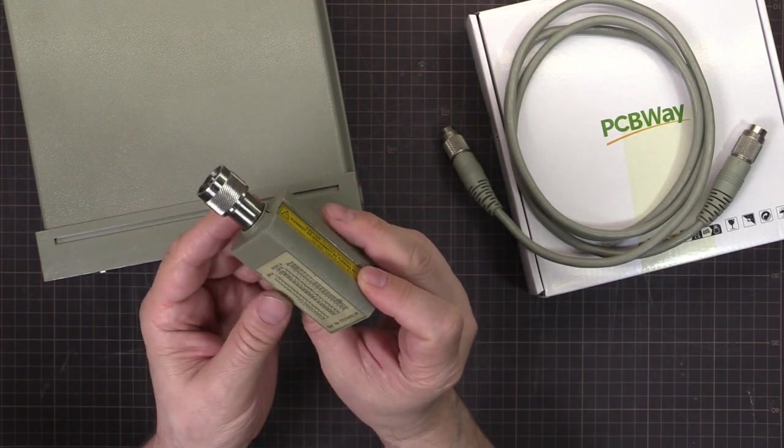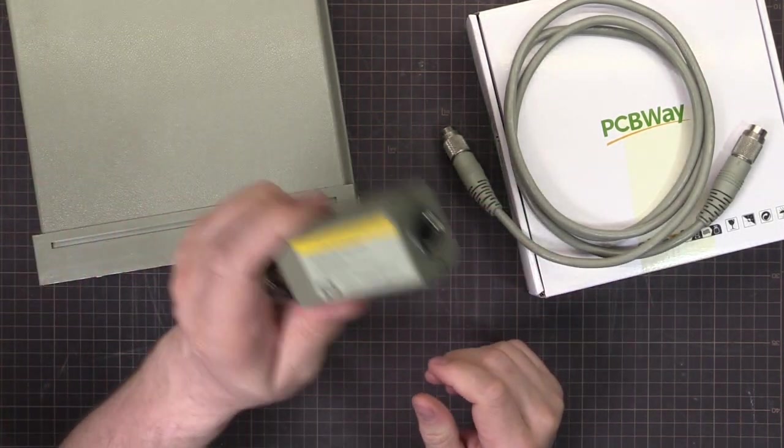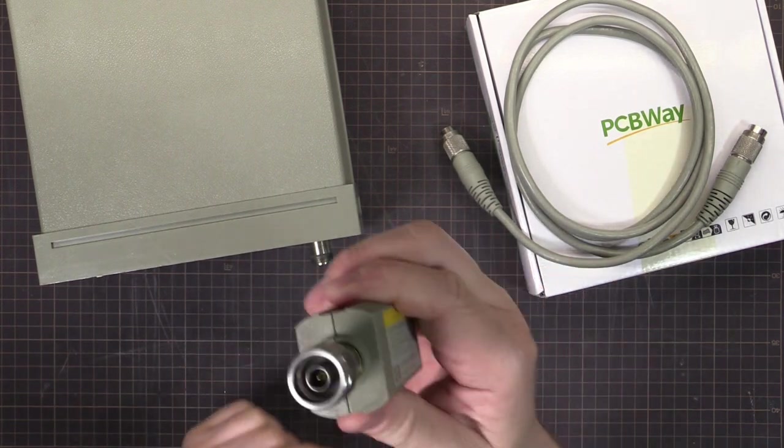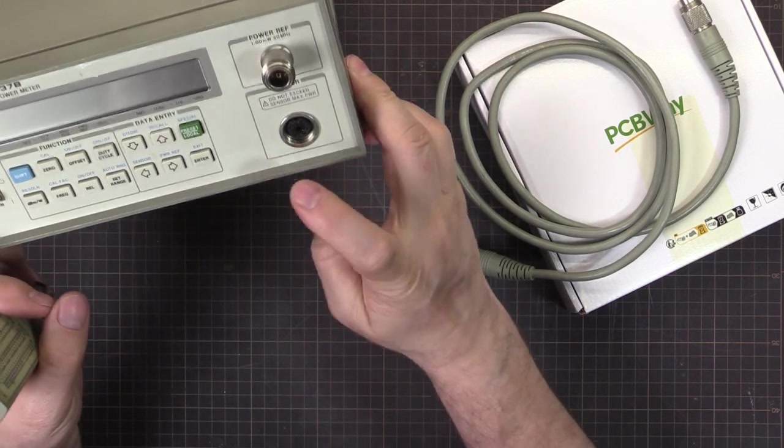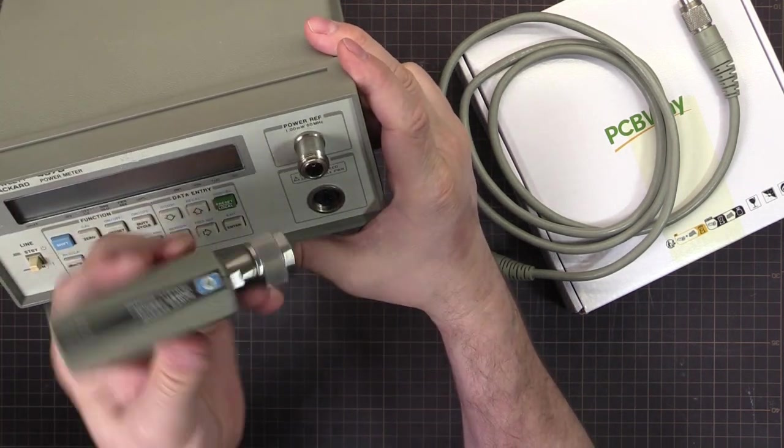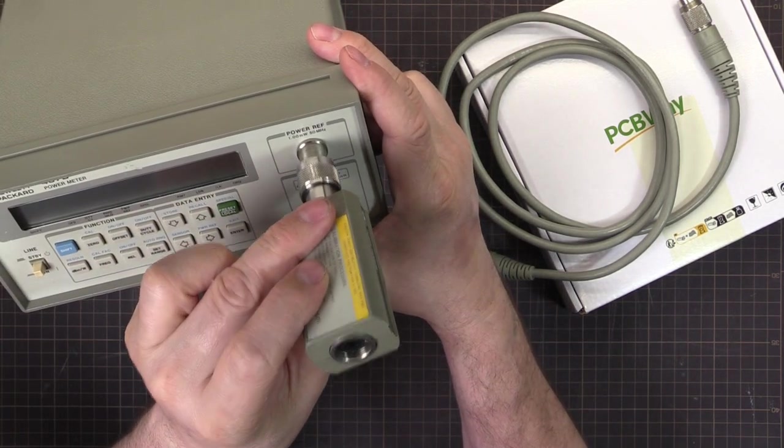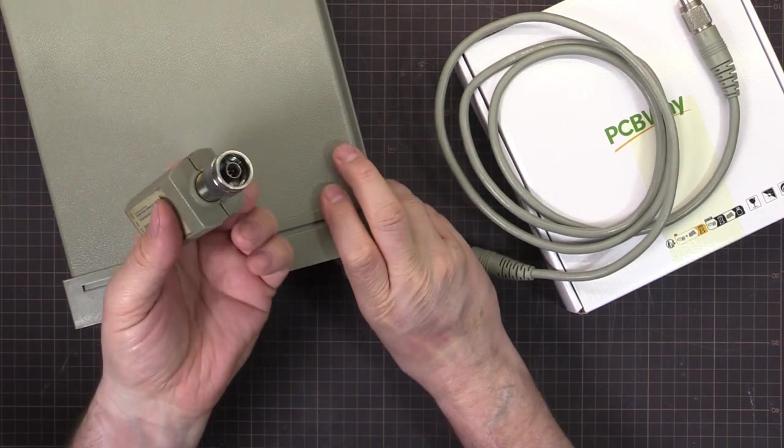These are hundreds of dollars. I got this one pretty cheap, I was lucky. They're really expensive when they're working. So you plug that through the cable into the front of the unit, and then you can calibrate it. You'd screw this on here and you can calibrate it and set the zero.